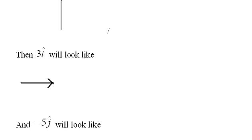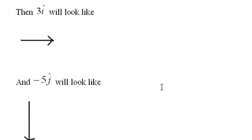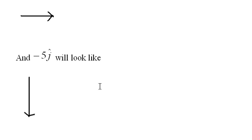Given those two vectors, then 3i will look like this: one, two, three units long at zero degrees. And negative 5j—that means not going this direction but this direction, multiplied by five—will look like this.